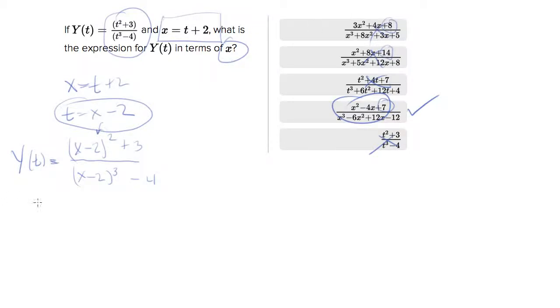So let's foil out (x minus 2) times (x minus 2) plus 3. This is the numerator that will equal x squared. So we're going to do first times first, outside times outside, inside times inside, and last times last. So x squared minus 2x minus 2x plus 4 plus 3, which equals x squared minus 4x plus 7, which is consistent with what we've already picked. That's good.